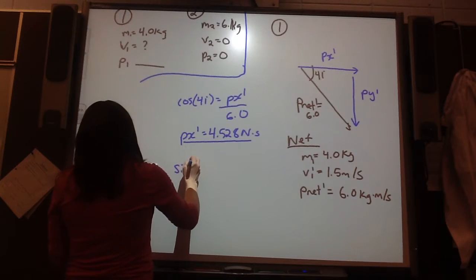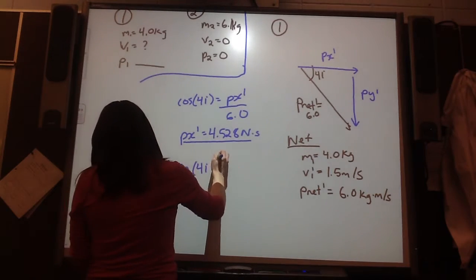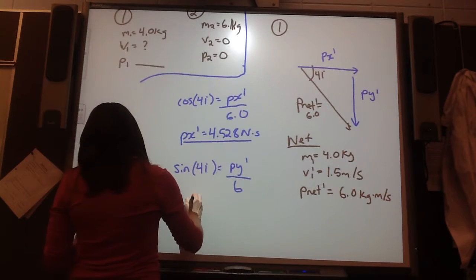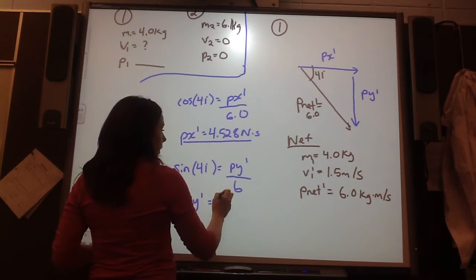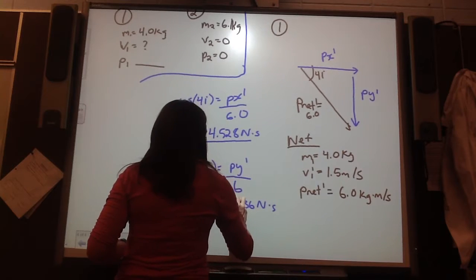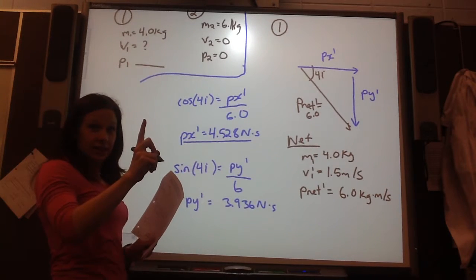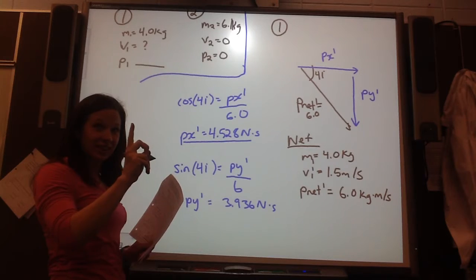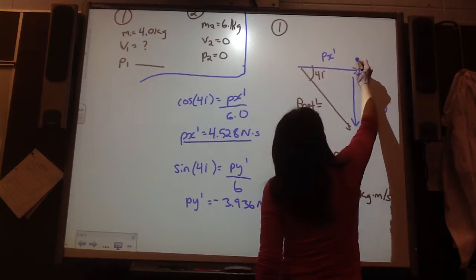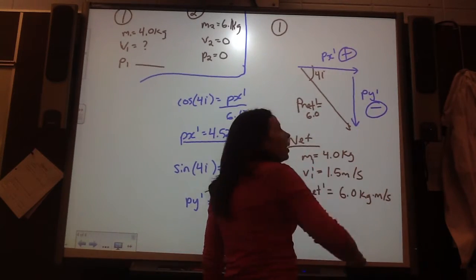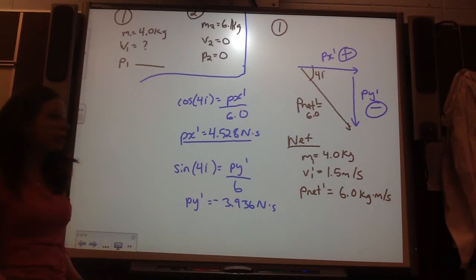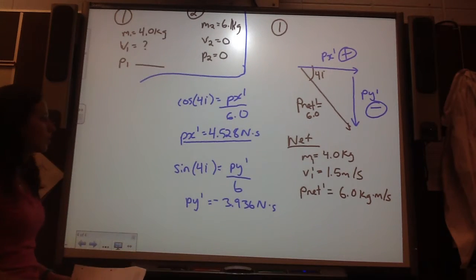And then, I'm going to use sine of theta to find my Py prime over hypotenuse. So, my Py prime is 3.936 Newton seconds but negative or positive? Negative. Okay. This value needs to be negative. This one can stay as it's positive. So, we need to add that in and make sure that this one is negative because its direction is negative once we broke it down into those vectors.